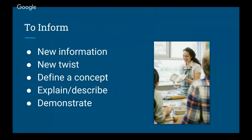Your first speech is a demonstration speech, so your general purpose is going to be to inform — you're going to be demonstrating a process and showing your audience how to do something. Your second speech, the informative speech, will also have a general purpose of to inform, where you'll present new information, define a topic or concept, explain, describe, or possibly include elements of demonstration.